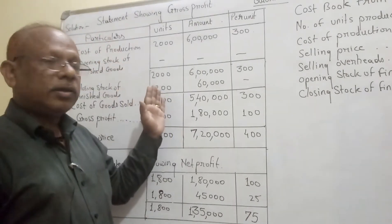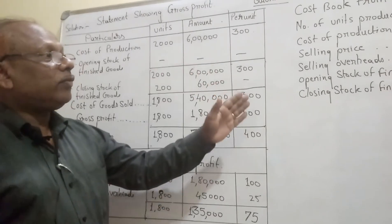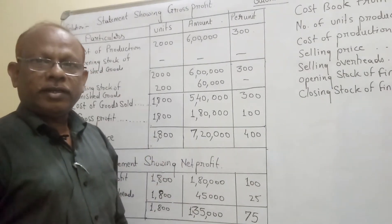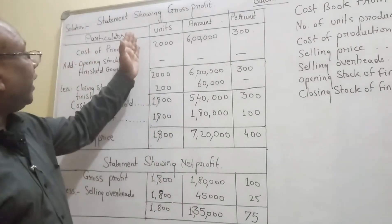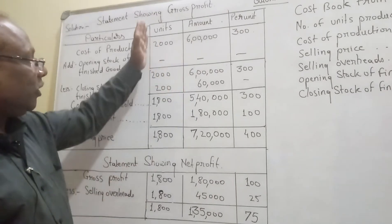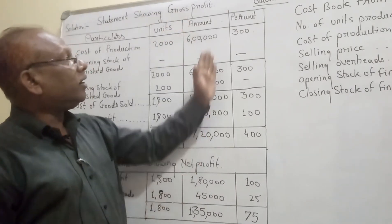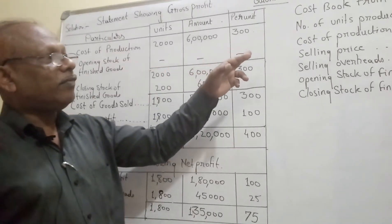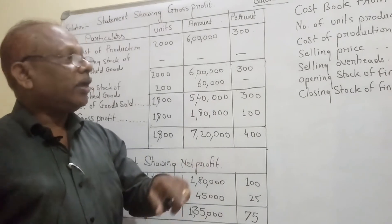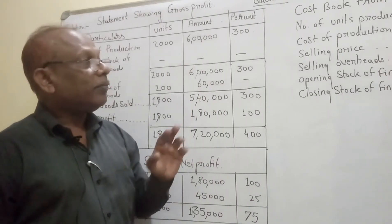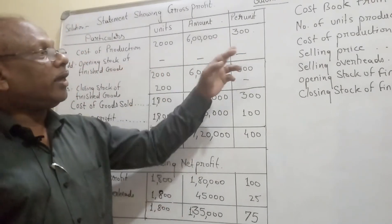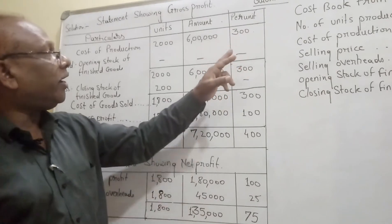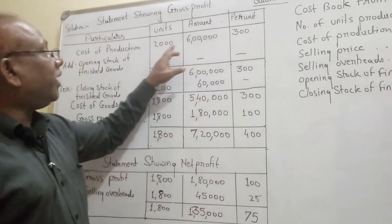I have drawn a format of the solution. As per the pro forma of the cost sheet, we have to assign the cost. There are three columns: units, amount, and per unit. The cost of production is already given as 300 rupees per unit, and 2000 units are produced. Multiplying 2000 units by 300 rupees per unit, we get 6,00,000 rupees.